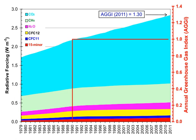Recent data also shows that the concentration is increasing at a higher rate. In the 1960s, the average annual increase was only 37% of what it was in 2000 through 2007. Total cumulative emissions from 1870 to 2017 were 425 ±20 GtC from fossil fuels and industry, and 180 ±60 GtC from land use change.